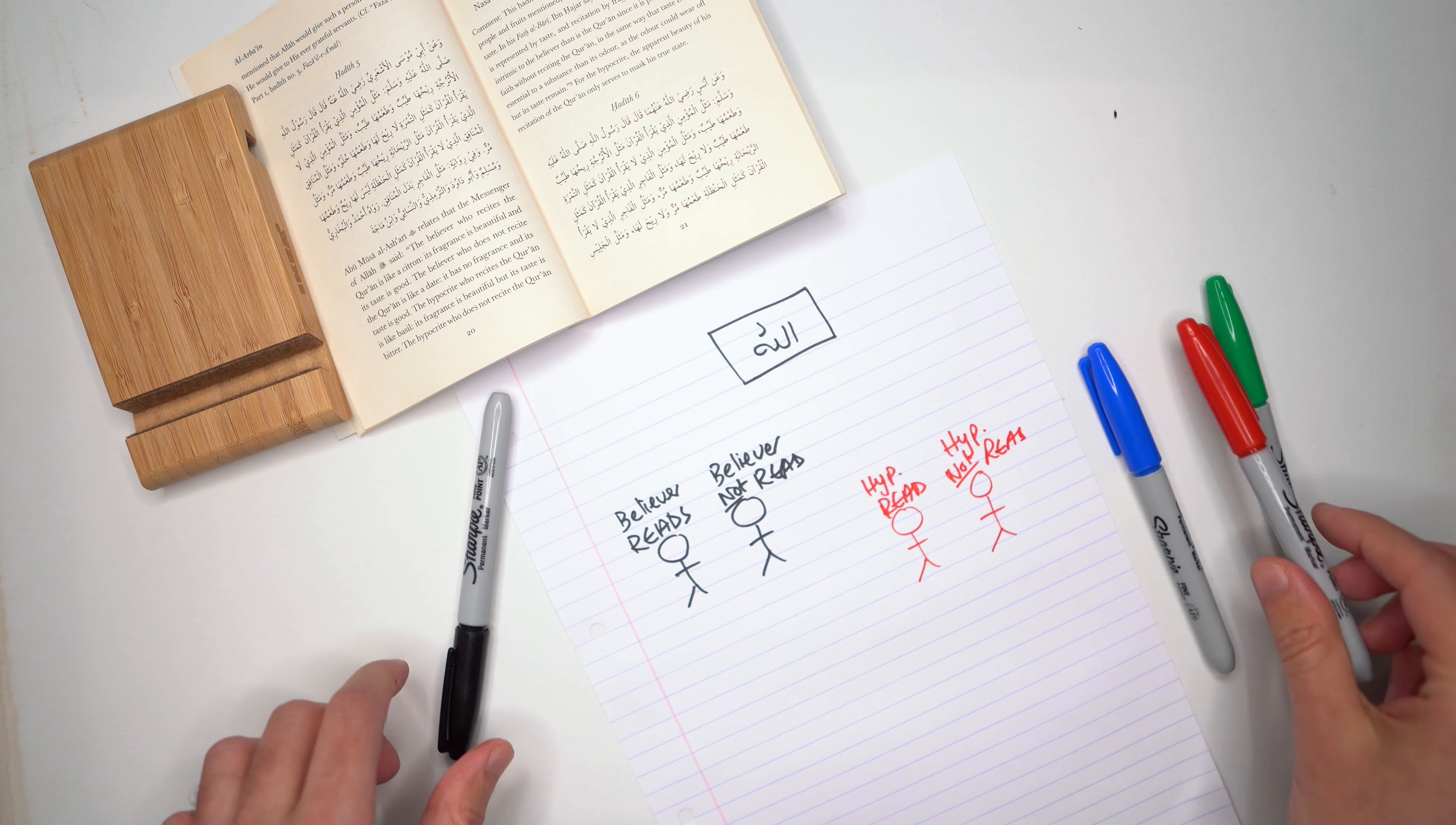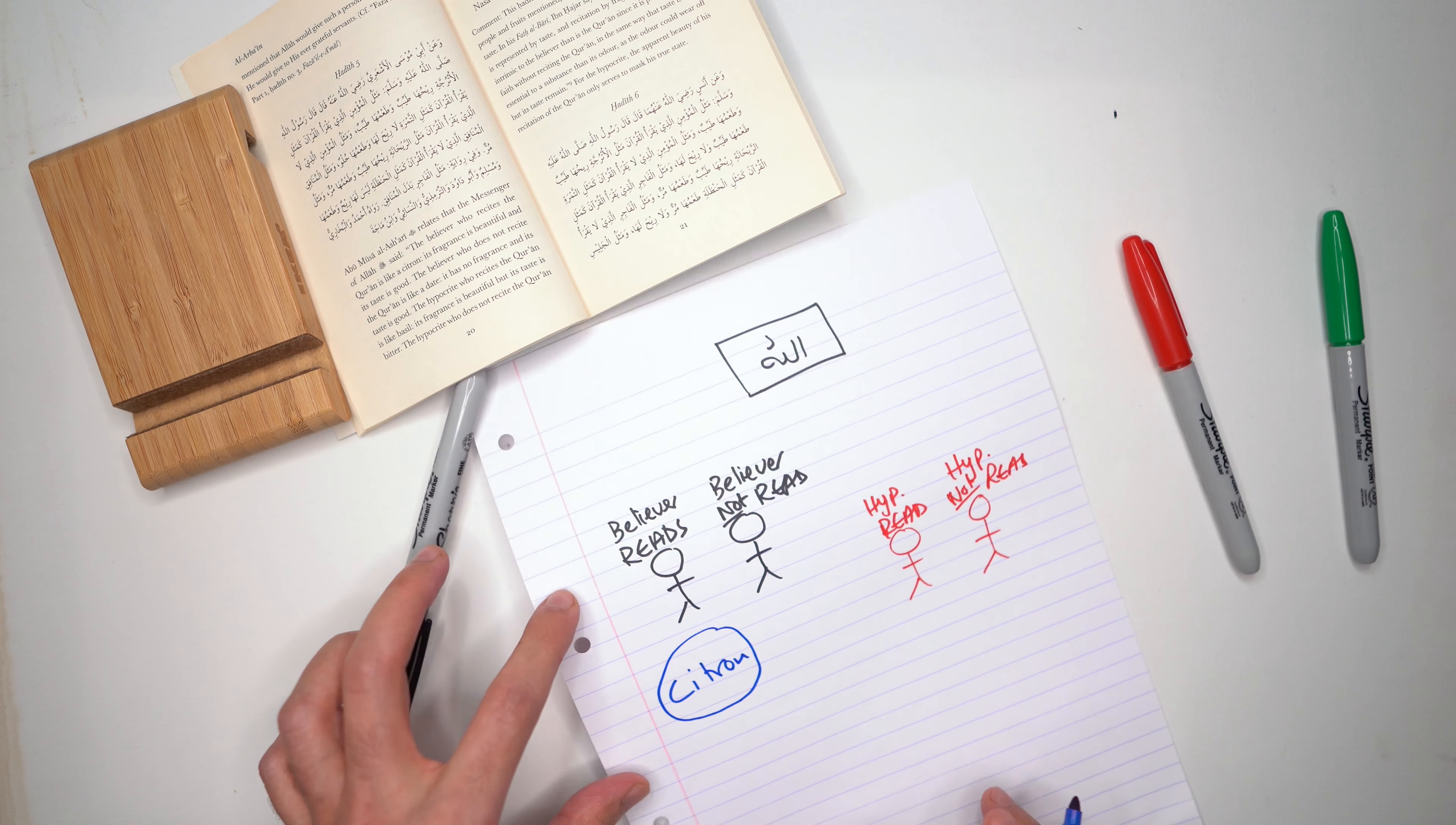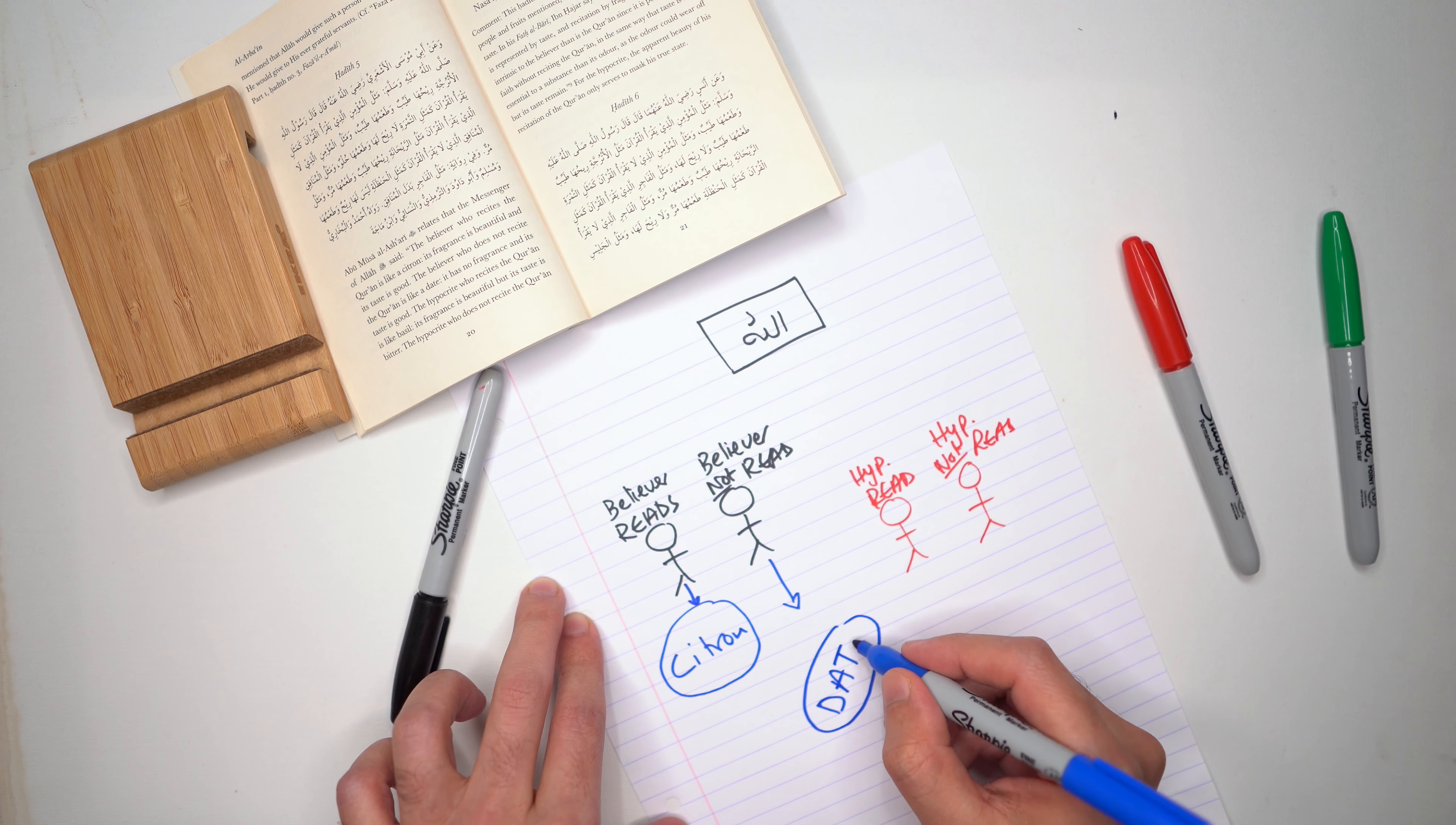The Prophet said that the example of a believer who actually reads the Qur'an is like the example of a citron fruit - an orangey, lemony kind of fruit. A believer who does not read the Qur'an, their example is like a date. So you guys know what dates are.